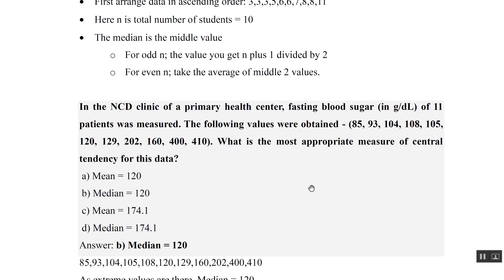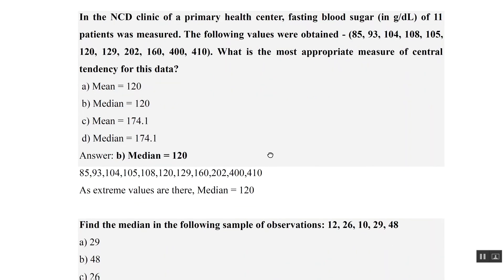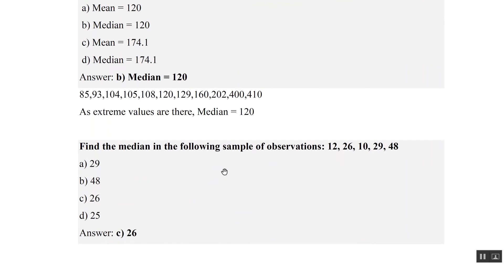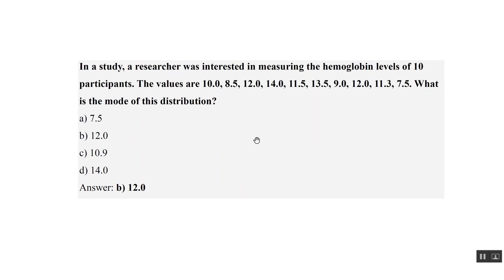For fasting blood sugar data with extreme values — including 82 and 410 — we take the median. First arrange in ascending order, then because there are 11 numbers, take the sixth value, which is 120. For mode, the maximum repeated value is 12, so 12 is the mode.